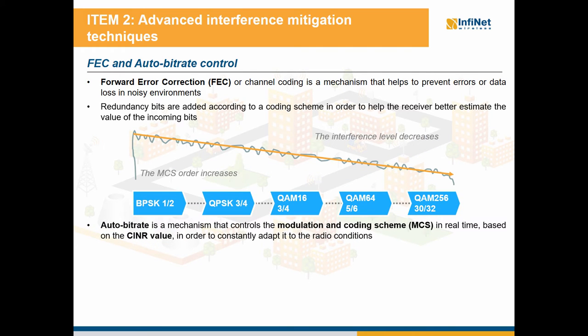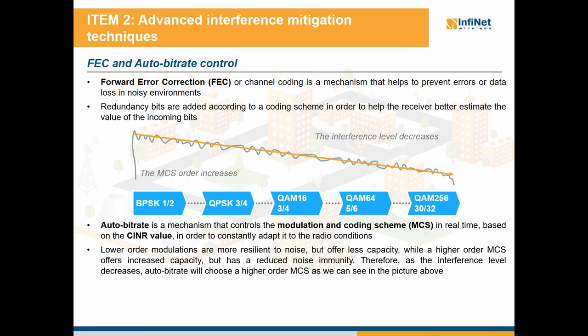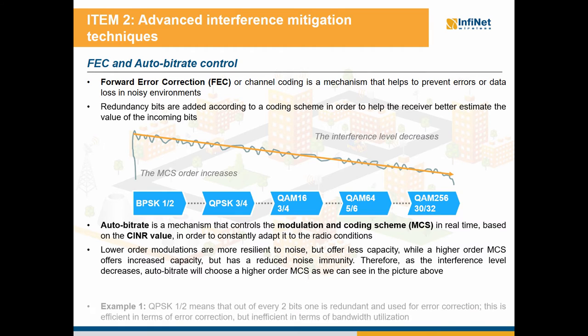Auto bitrate is a mechanism that controls the modulation and coding scheme in real time, based on the CINR value, in order to constantly adapt it to the radio conditions. As we know, lower order modulations are more resilient to noise but offer less capacity, while higher order modulations are less resilient to noise and offer increased capacities. We can see in the picture that as the interference level decreases, auto bitrate will choose a higher order modulation and coding scheme.